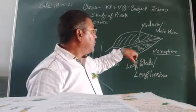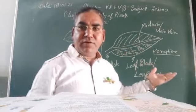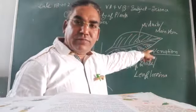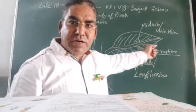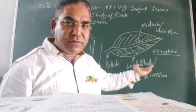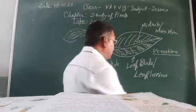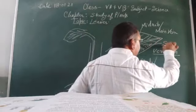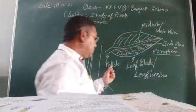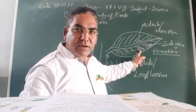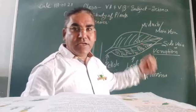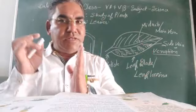So we have learned that a leaf has: number one, petiole; number two, leaf lamina; and number three, midrib and veins - which include the main vein and side veins. These are the different parts of the leaf.